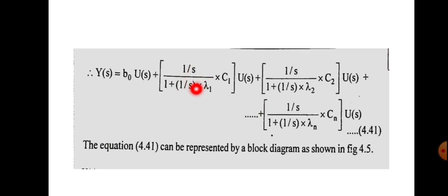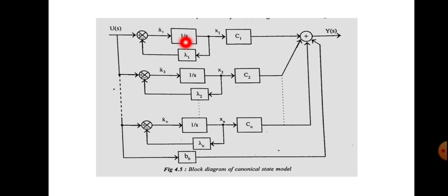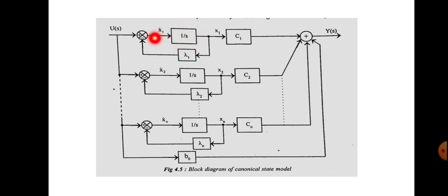This actually represents a closed loop having open-loop transfer function 1/s and feedback λ1, with c1 as the scaling factor. Each term can be represented by a block diagram where 1/s is G(s), H(s) is λ1, and λ1 is fed back to the negative terminal. This represents an integrator — 1/s means it is integrating the input. The input to this integrator is x1-dot (derivative of state variable x1) and the output is x1.